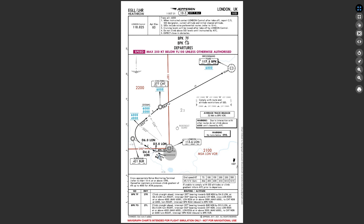Brookmans Park 7 Foxtrot and Brookmans Park 7 Golf — one would be for 27 right and one would be for 27 left. 7 Foxtrot is 27 right and 7 Golf is 27 left. And here is the departure route written out in words.